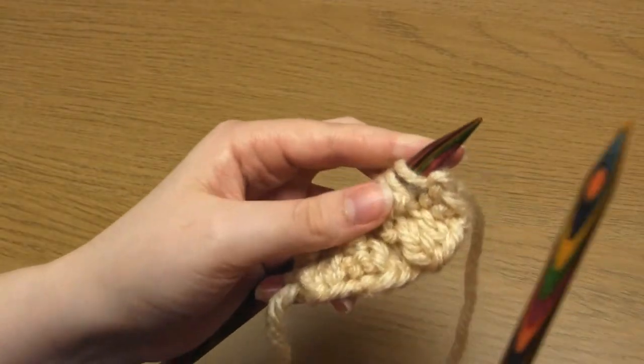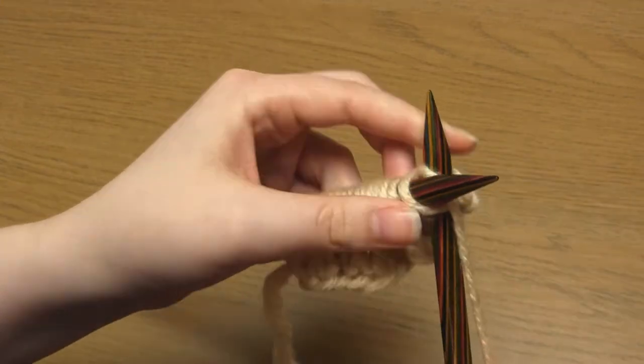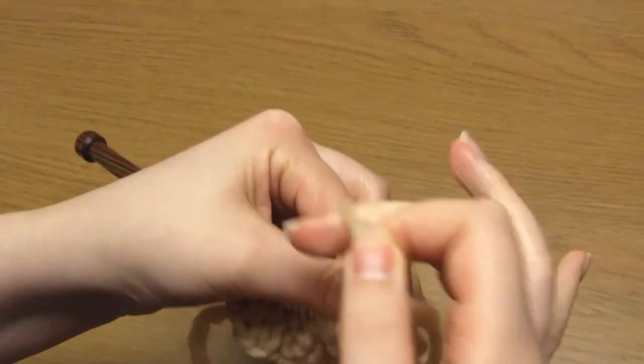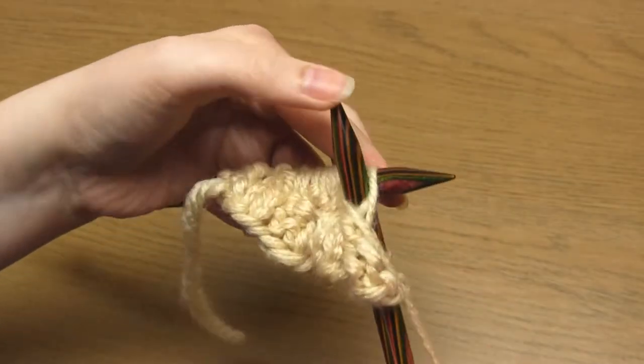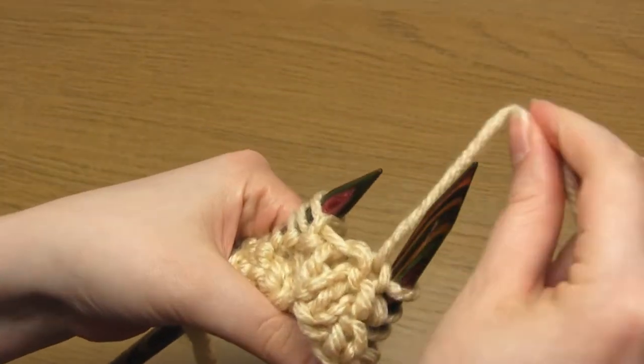And finally row four is the same as row one. So that's knit two, purl two, and knit two.